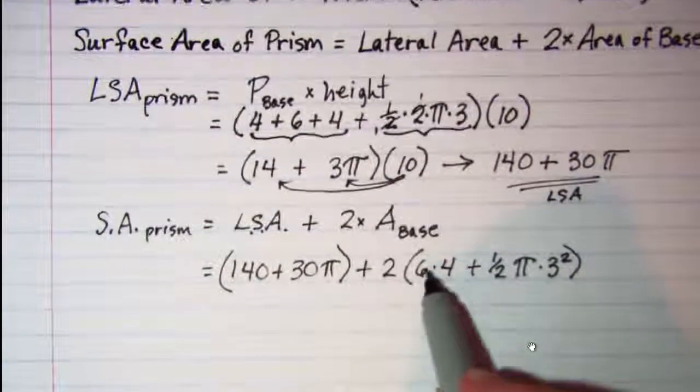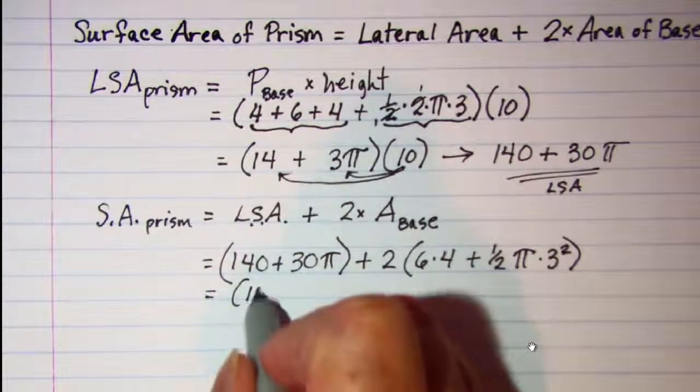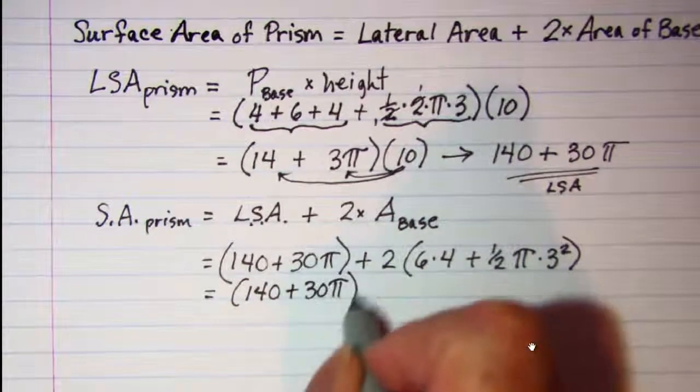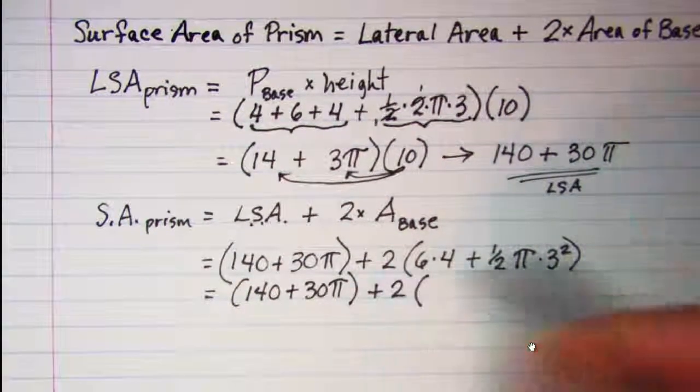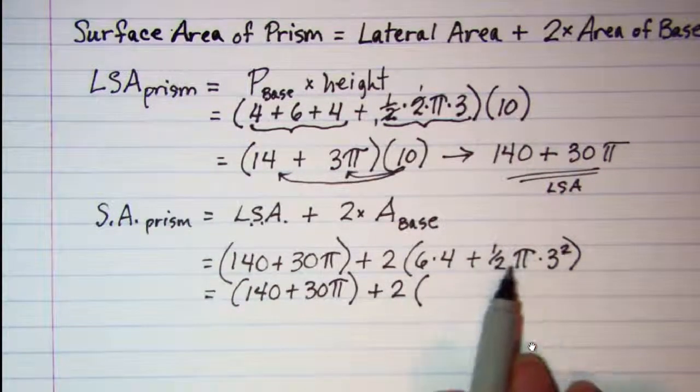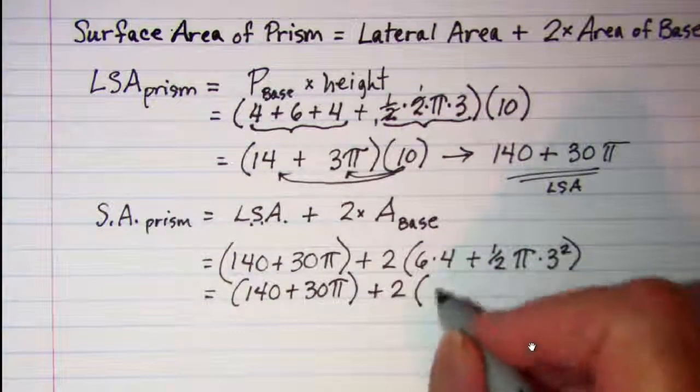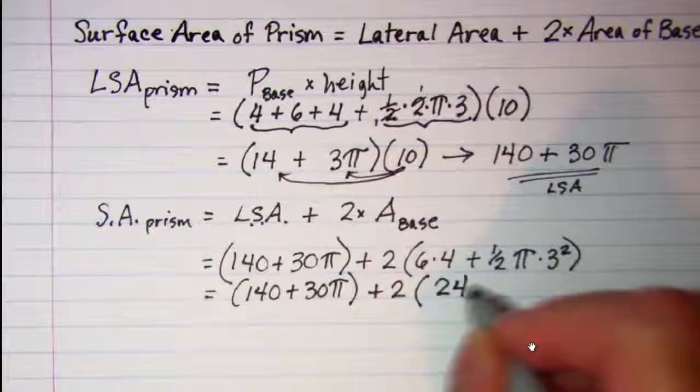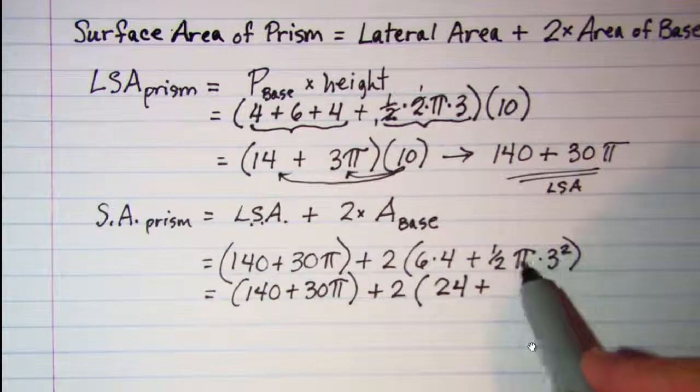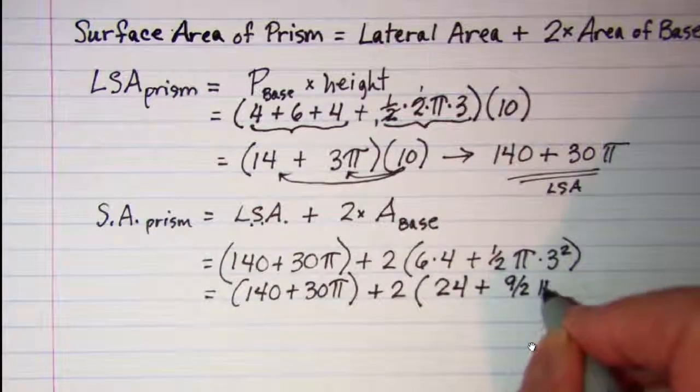Let me do some simplifying here. I will just copy this first part: 140 + 30π + 2 times. Now again I have a rational part and then an irrational part so I will do those separately. 6 times 4 is 24 and then 3² is 9 times 1/2 is 9/2 times π.